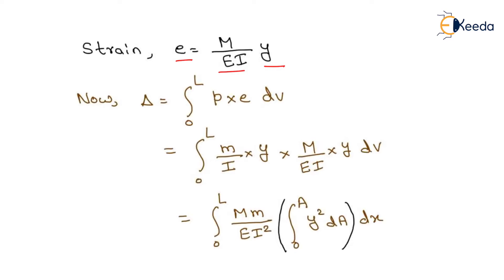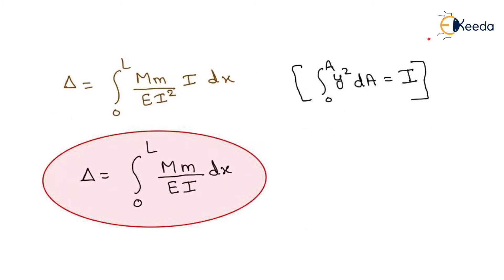Substituting the values of stress and strain into the equation, delta equals the integration from 0 to L of M squared upon EI squared, with the inner integration from 0 to A of Y squared dA, then integrated with respect to dx. We know that the integration of Y squared dA from 0 to A equals the moment of inertia I.